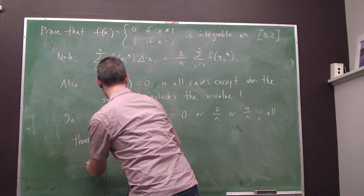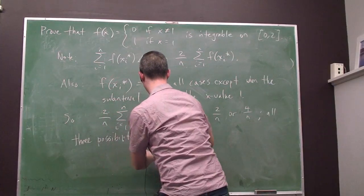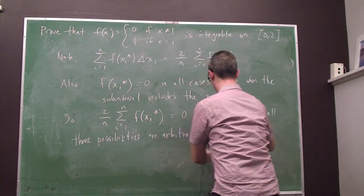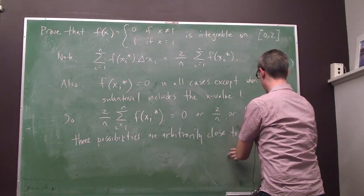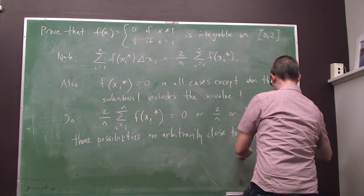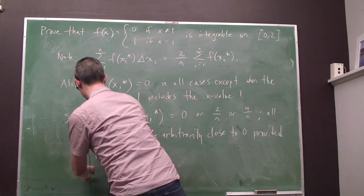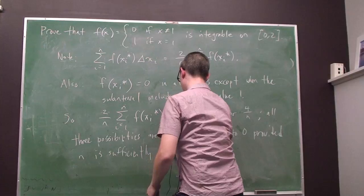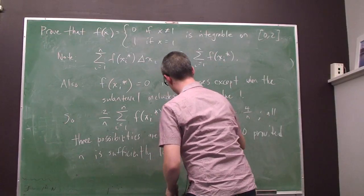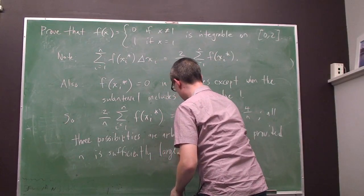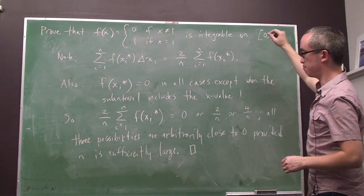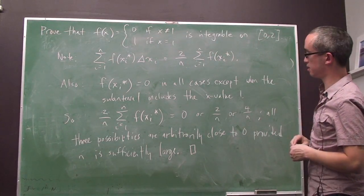So I'm going to write all three possibilities are arbitrarily close to 0, provided n is sufficiently large. And that proves the claim. It proves that this function is not only integrable on the interval 0, 2, but that its integral is equal to 0.